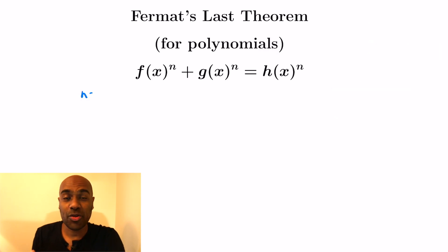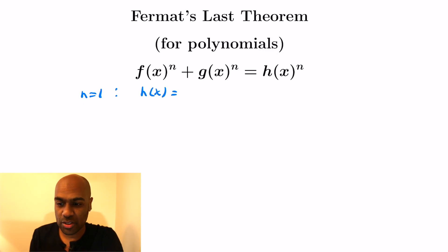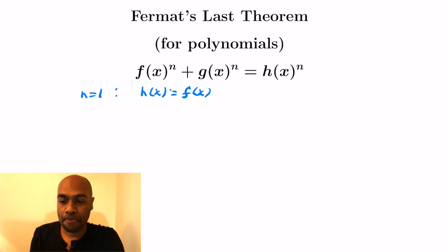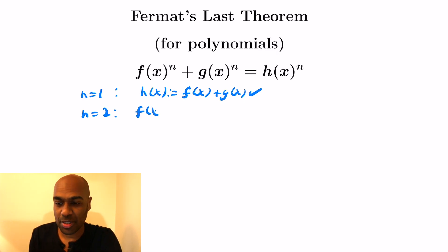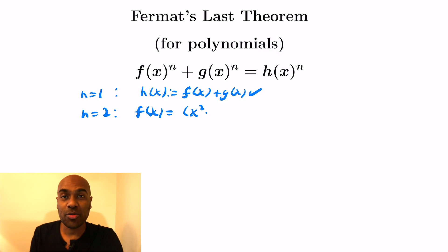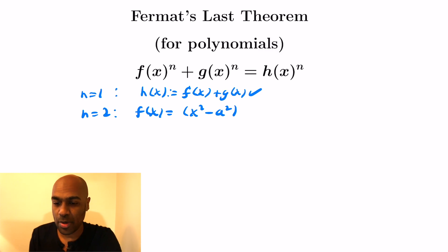What we're going to do is solve this problem for polynomials with complex coefficients. When n=1, given any f and g, we can set h to be the sum f+g and we have a solution. So we get many solutions when n=1. For n=2 we actually get many solutions too, inspired by the Pythagorean Theorem in a kind of interesting way.